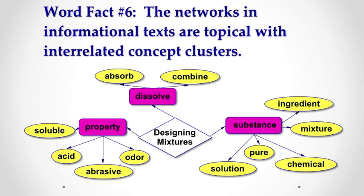When it comes to the networks of informational texts, the words in the 10% are typically topical with interrelated concept clusters. Here's an example from a unit on designing mixtures in chemistry for grades four to five. We see prominent words — the words in the pink nodes. These words are related to one another, so to define dissolve, we need to talk about property. Furthermore, the words that are part of the networks of each node are words that flesh out or expand upon the ideas of one of the nodes. They're connected, but they aren't synonyms. And once we understand more about abrasive and acidic, we come to understand more about properties.